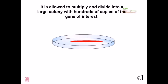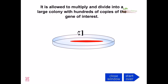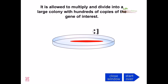The colony is allowed to multiply and divide into a large colony with hundreds of copies of the gene of interest. We will find our gene of interest inserted into the desired bacterial cell. That's how we can clone a gene onto a desired individual.